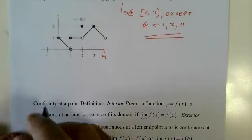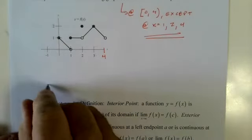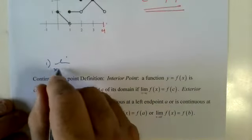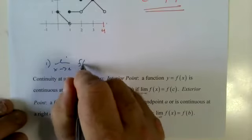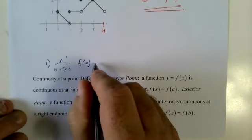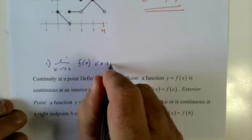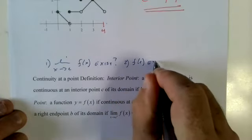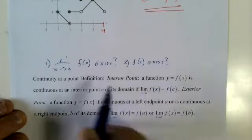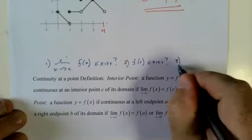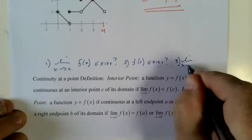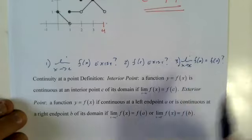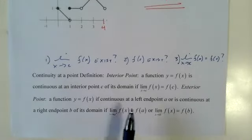So I guess I would break it into questions. I would say: the limit as x approaches c of f(x)—does it exist? Well, then I'd say does the function exist there? So does the limit exist, does the function exist, and if so, does the limit equal the function there? So that's how I would rewrite this.